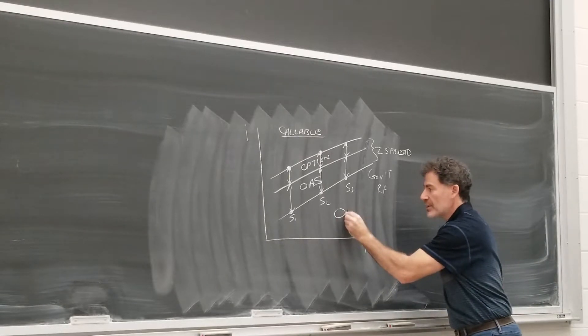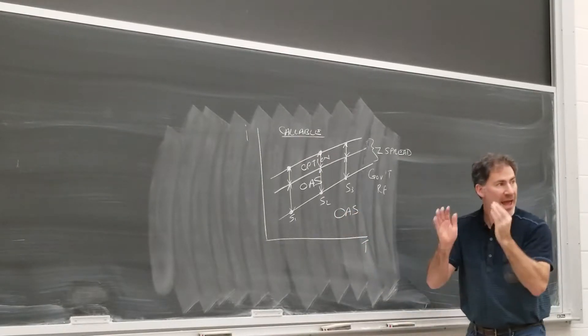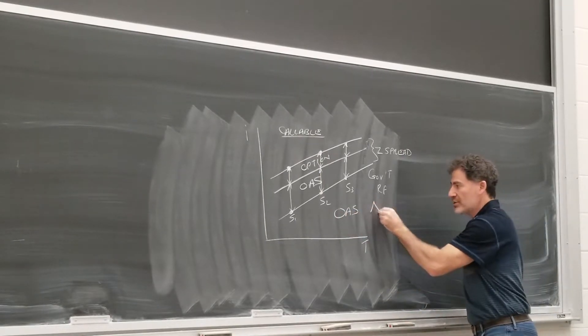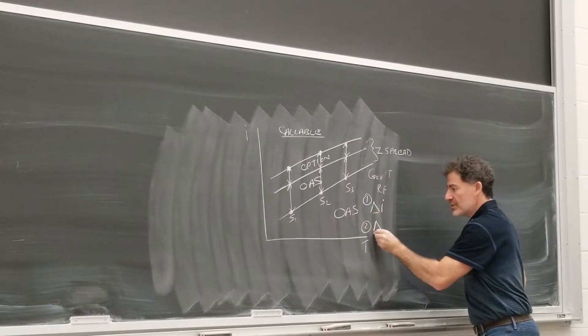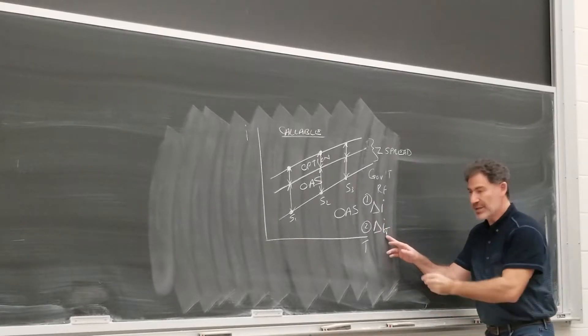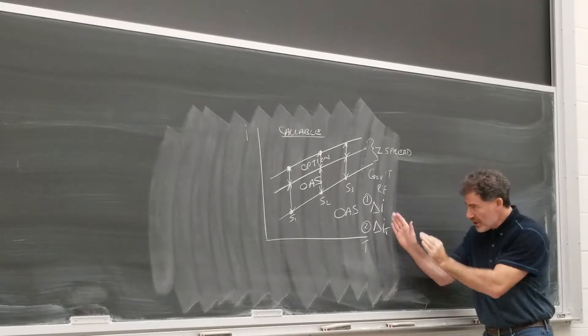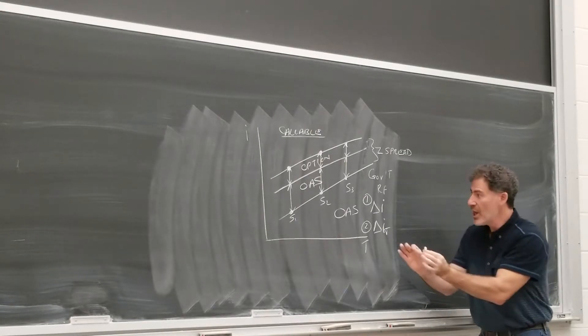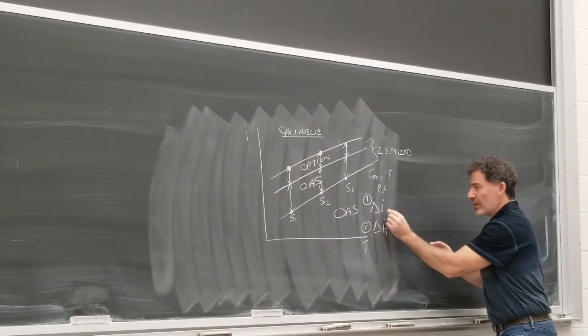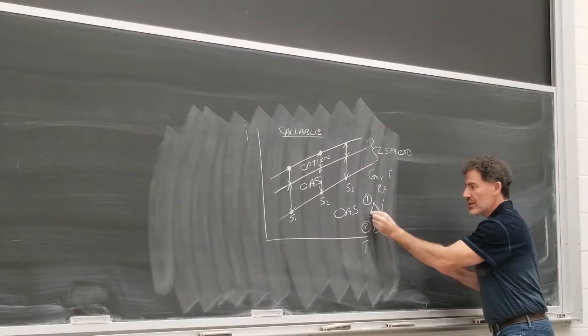So now our learning outcome statements want us to talk about this option adjusted spread and how it reacts to changes in interest rates and changes in interest rate volatility. This is the standard deviation of interest rates. They kind of look the same, but they're different. So make sure we know this. So, let's look at the first case here.